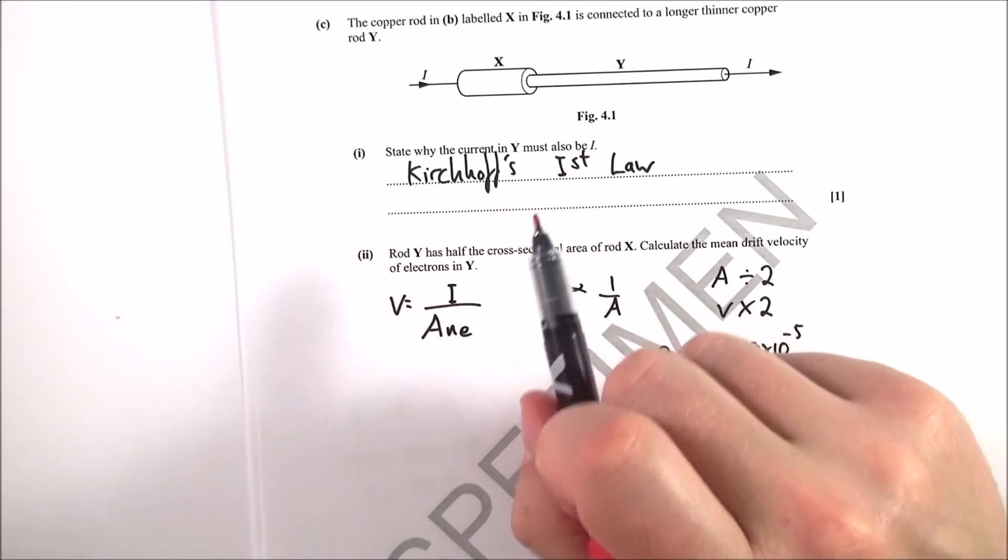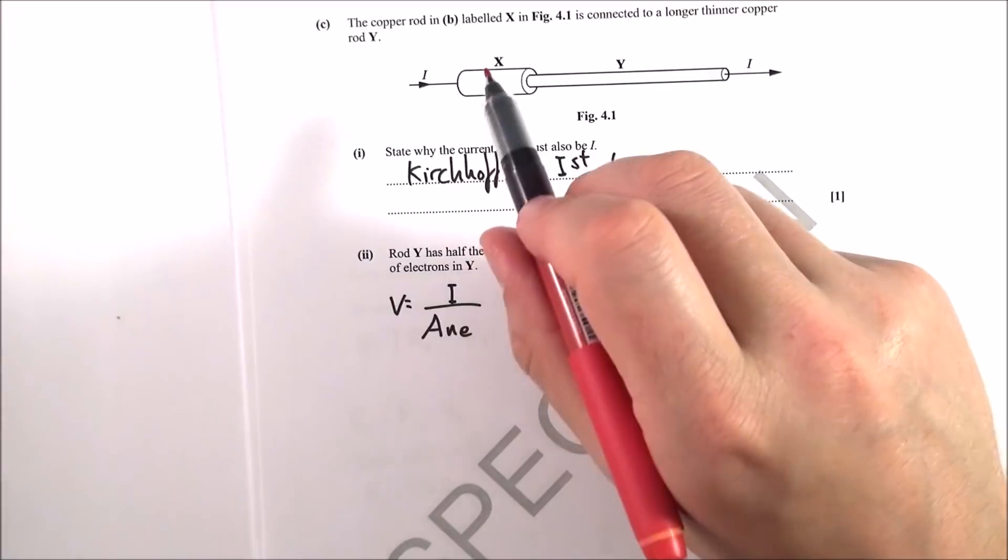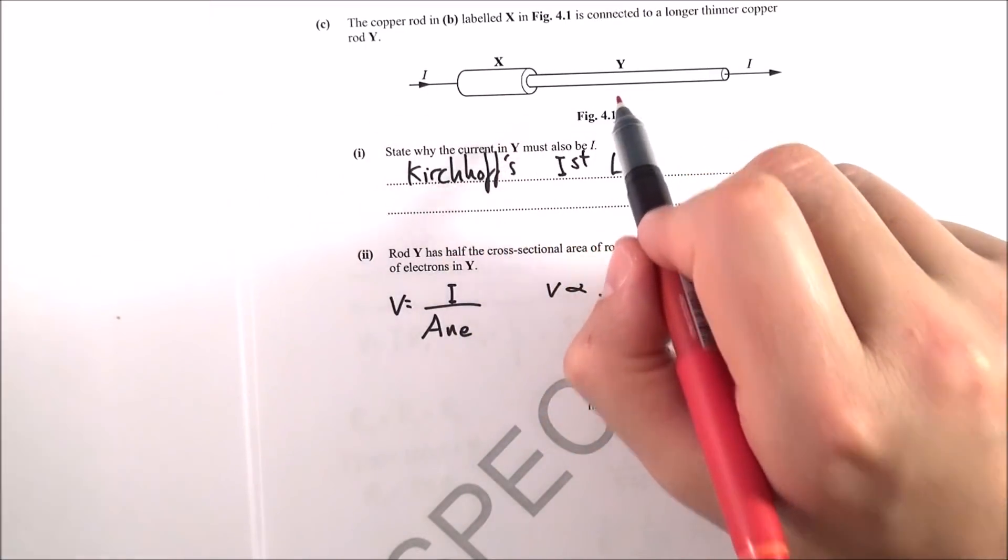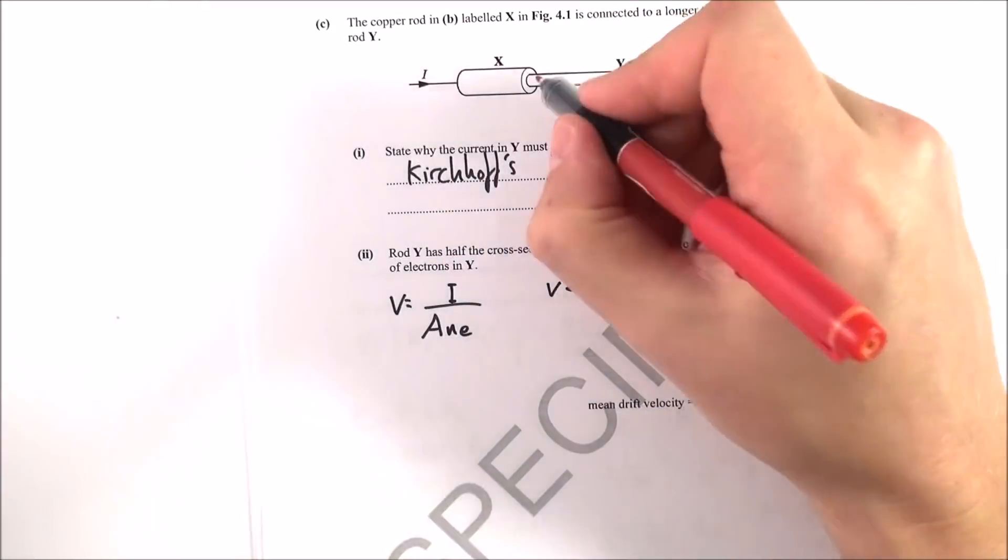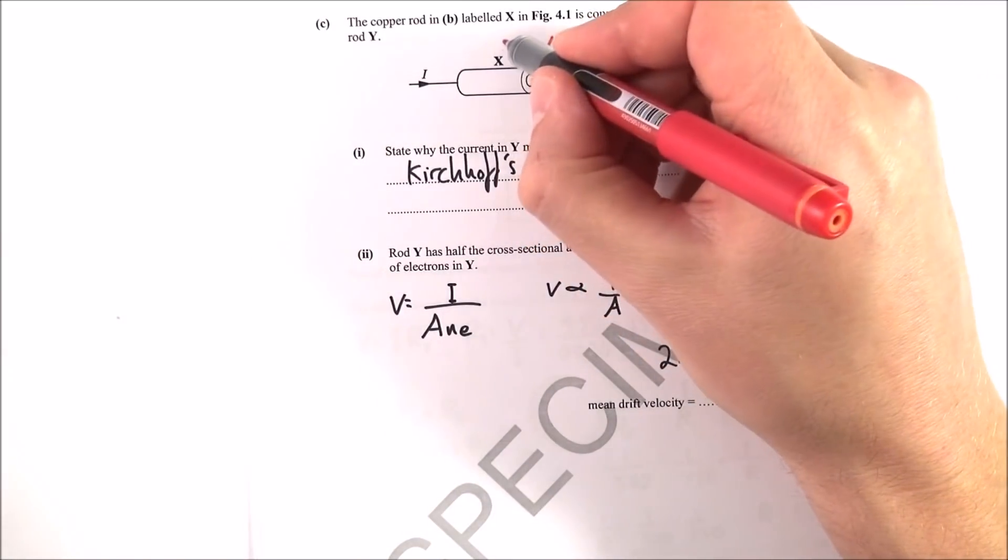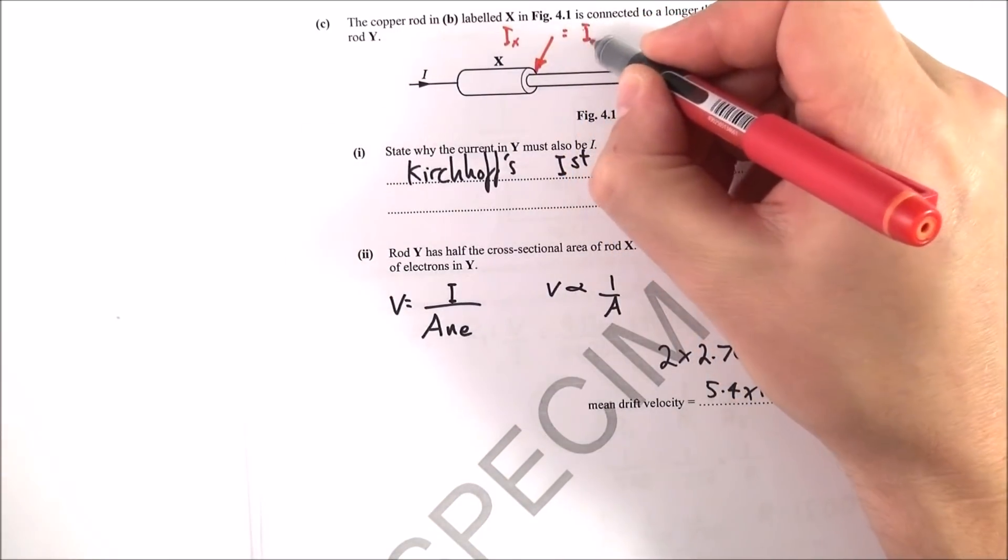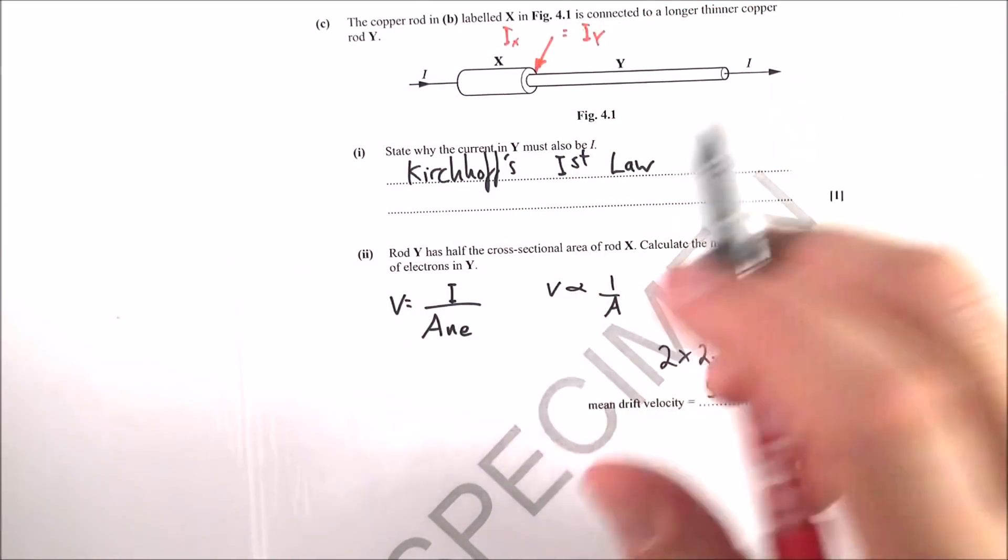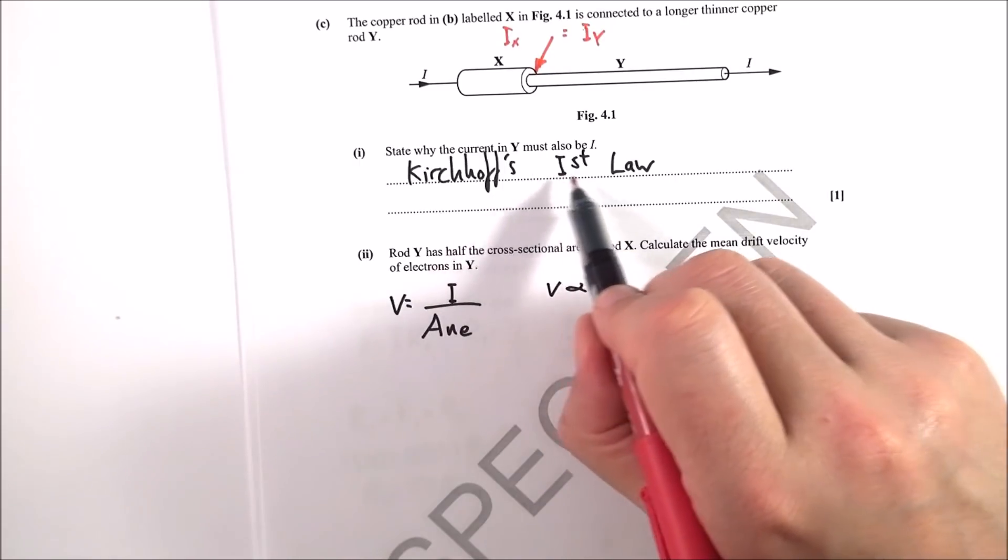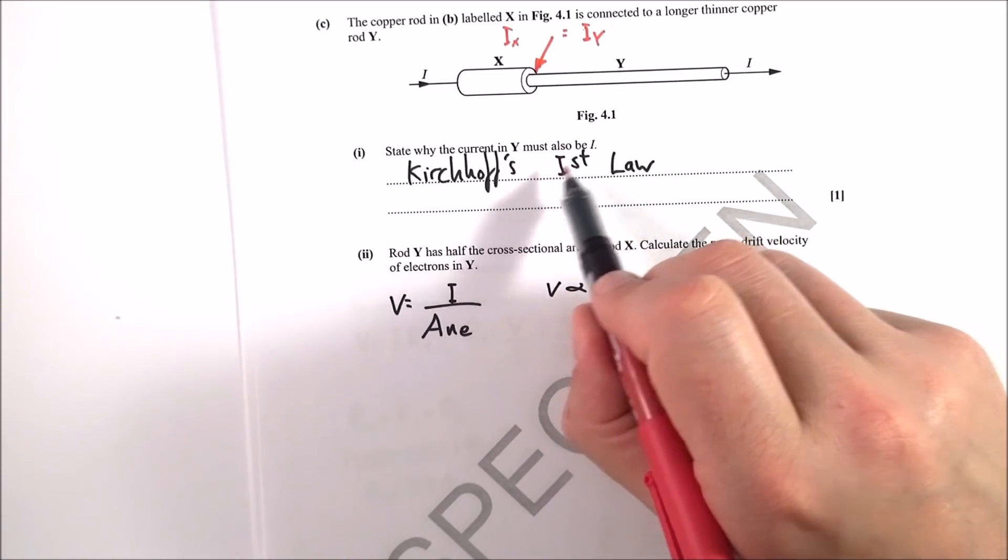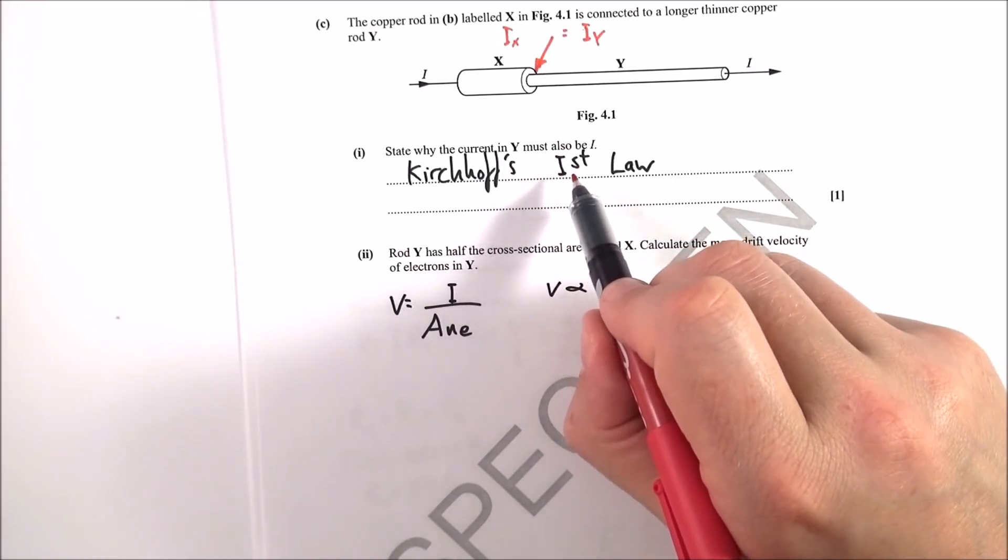Well, this is due to Kirchhoff's first law, that the current in any part of that series circuit must be the same. So let's think at this point here as a junction. The current into the junction, which we call IX, must be equal to the current out of the junction, which is IY. And if you maybe think of Kirchhoff's first law as a letter I, then that may help you remember that Kirchhoff's first law is to do with current.